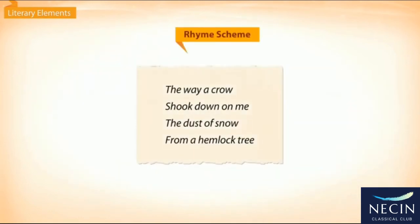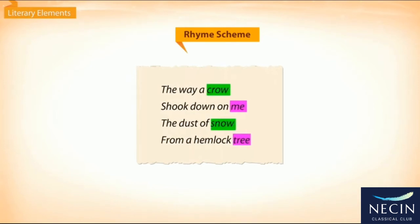The way a crow shook down on me the dust of snow from a hemlock tree. The words crow and snow rhyme with each other. The words me and tree also rhyme with each other. So if we assign A to crow and snow and B to me and tree, then the rhyme scheme of the stanza is ABAB.